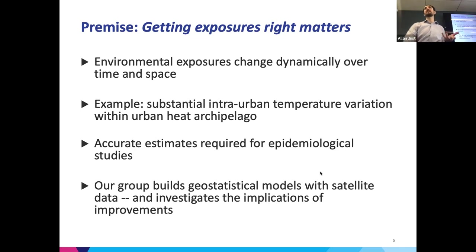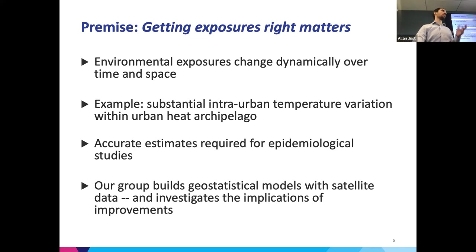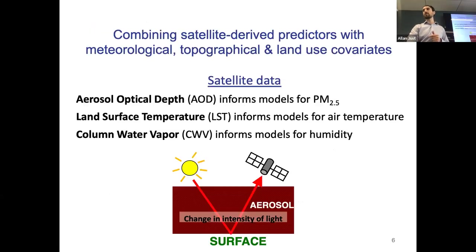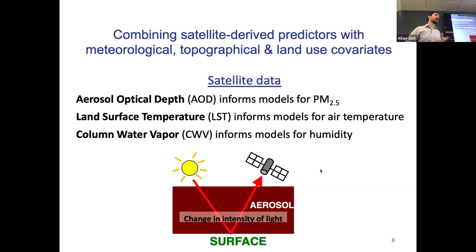My group builds geostatistical models using satellite data, and then we're investigating the implications of having improvements — what is the impact of reducing measurement error, or thinking about having models that have less bias? When we're using satellite data, we use several different kinds of things that can be measured.